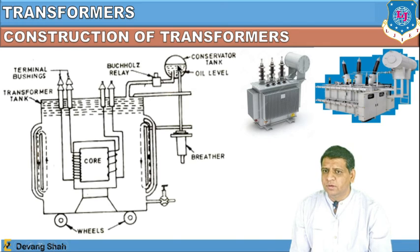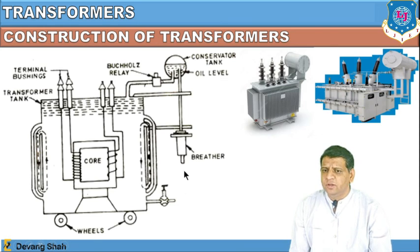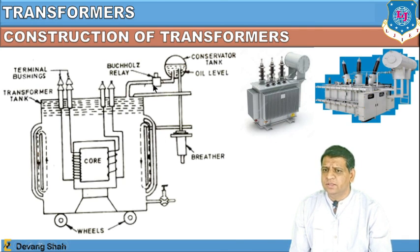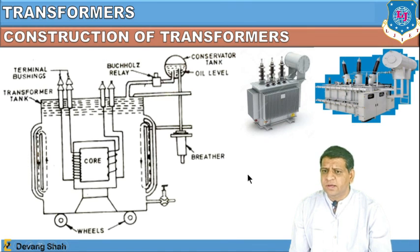The hottest oil travels from the conservator through the Buchholz relay, is cooled down by the breather circuit which is exposed to air, absorbing environmental air inside the tank to cool the oil. The oil continuously circulates, and extra heat dissipation is managed by this mechanism. The two windings come out of the tank as terminals — primary and secondary. The Buchholz relay controls the flow of oil between the transformer tank and the conservator tank. This is the complete construction of a large industrial transformer designed to handle significant heat generation during operation.